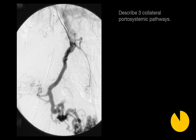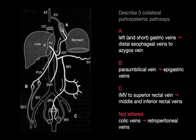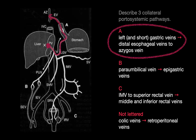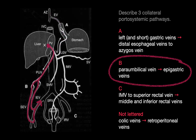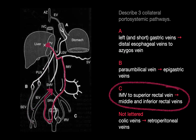Three portosystemic collateral pathways: First, porto-venous blood can decompress into the azygous vein via the left and short gastric veins and distal esophageal veins. Second, porto-venous blood can decompress into the external iliac vein via the peri-umbilical vein and epigastric veins. Third, porto-venous blood can decompress into the internal iliac vein via the IMV, superior rectal veins, and middle and inferior rectal veins.